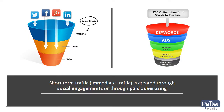Short-term or immediate traffic is created through social engagements or through paid advertising. You can go out and buy some ads through either Facebook or Google AdWords, and that'll help start generating traffic right away — that's what I mean by short-term or immediate traffic. The other thing you can do is start sending people to your site through social interactions, by getting onto your Facebook, your LinkedIn, and your various social platforms.